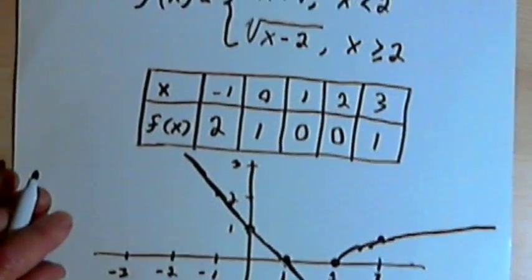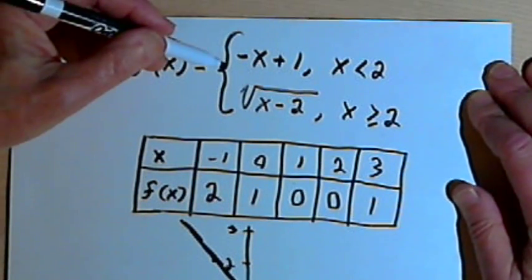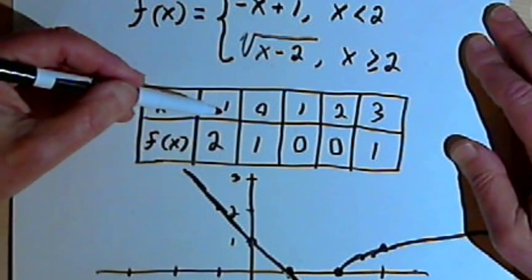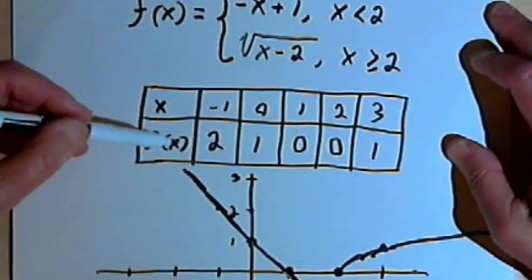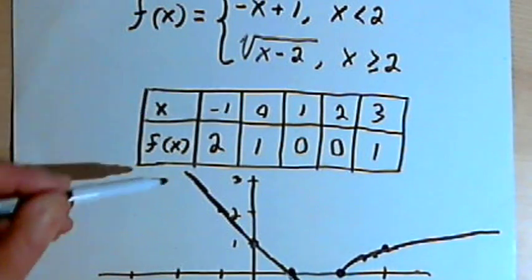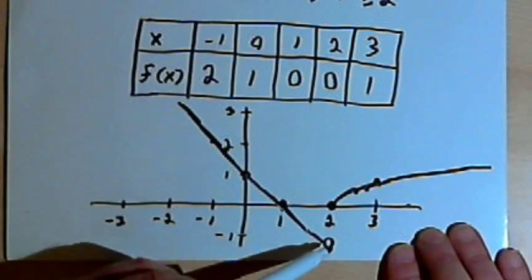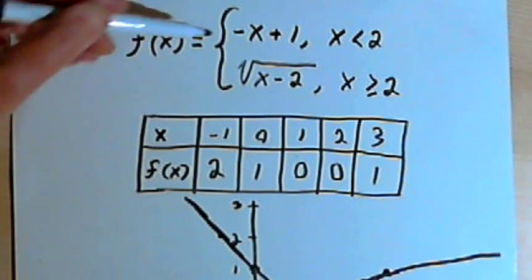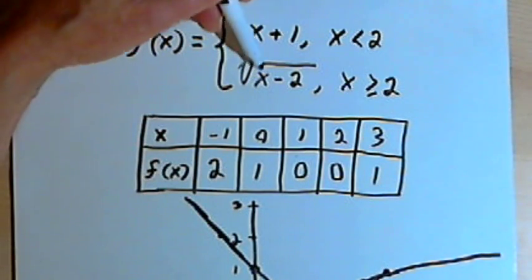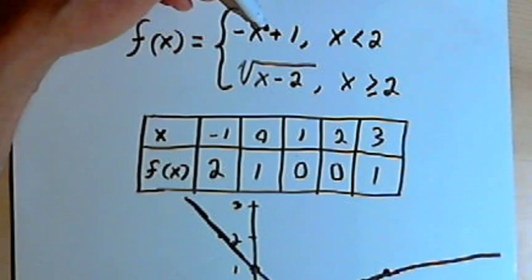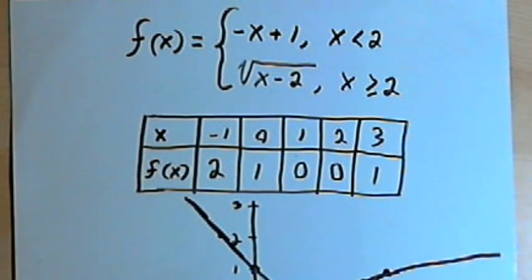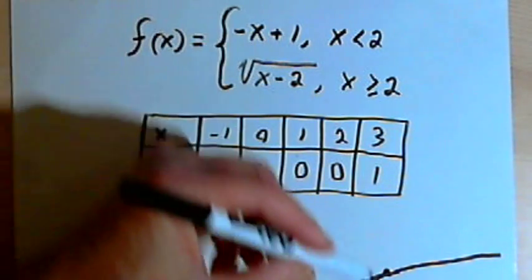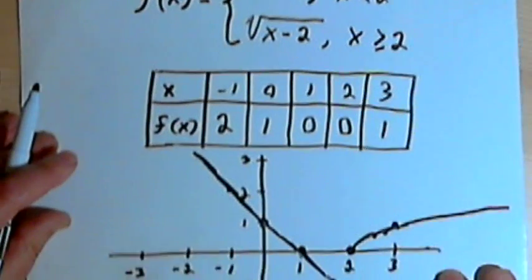Basically what I've done is I've taken the piecewise defined function, I've filled in some values in a table for x and f of x, and then I can use those values to plot some points on a graph and connect the lines. I'll be able to connect the lines fairly well if I remember what kind of function each part of the piecewise defined function is. The first part was a linear function, so I was able to connect those in a straight line. The second part was a square root function, so I drew a smooth curve for the square root part of it.